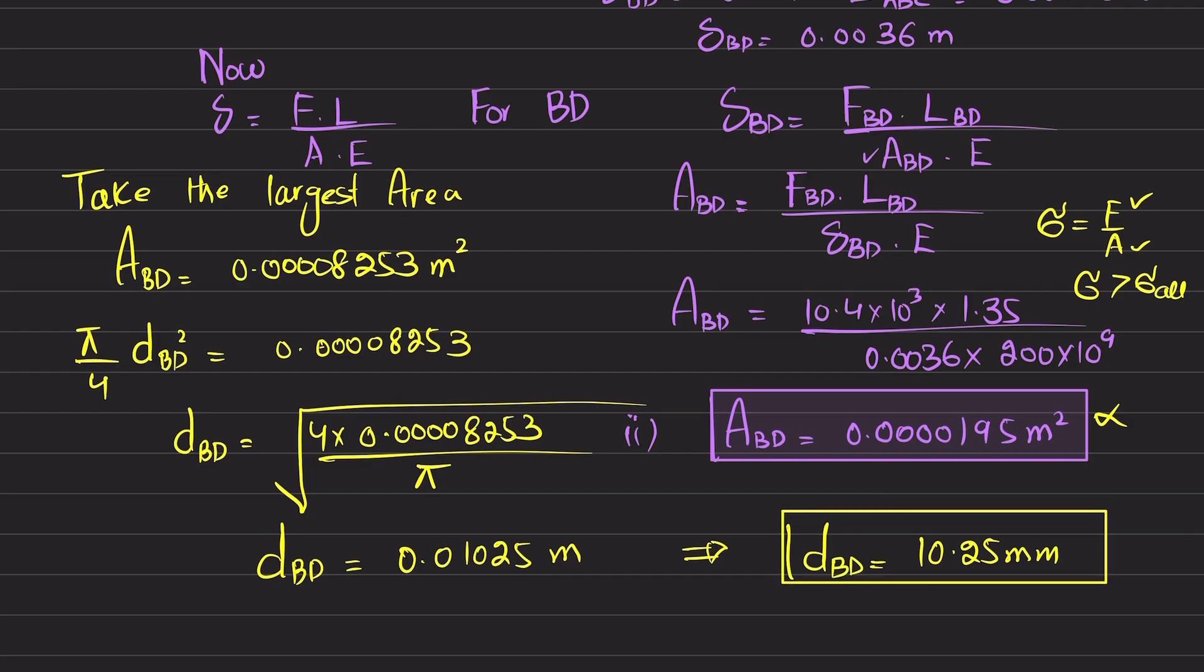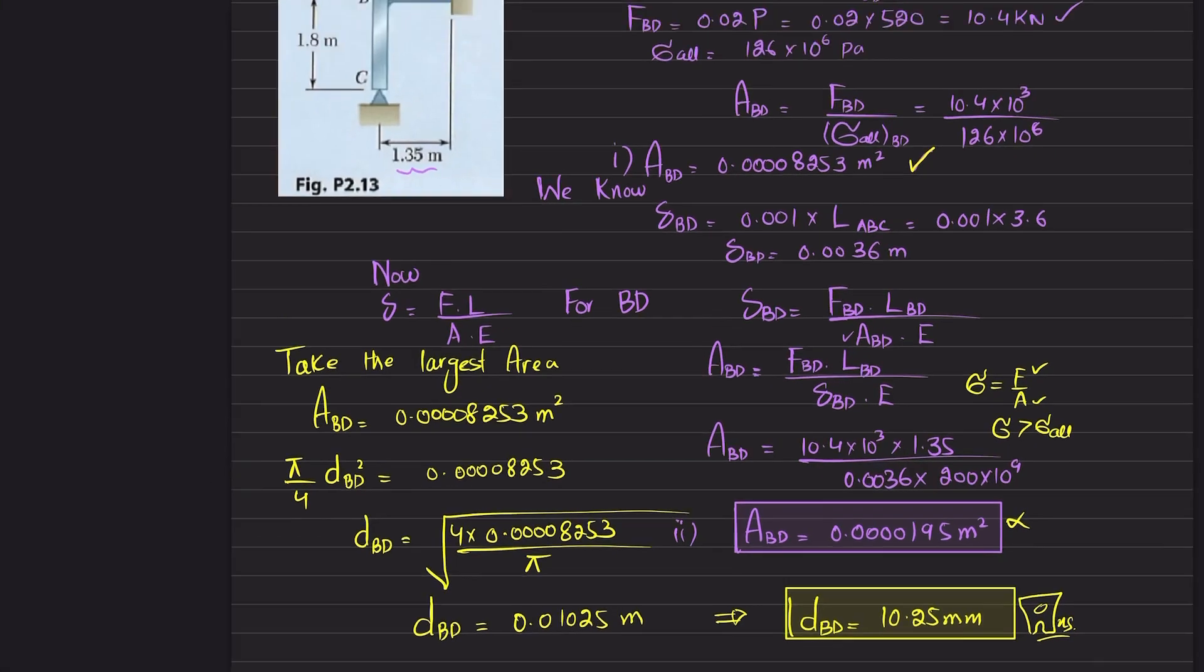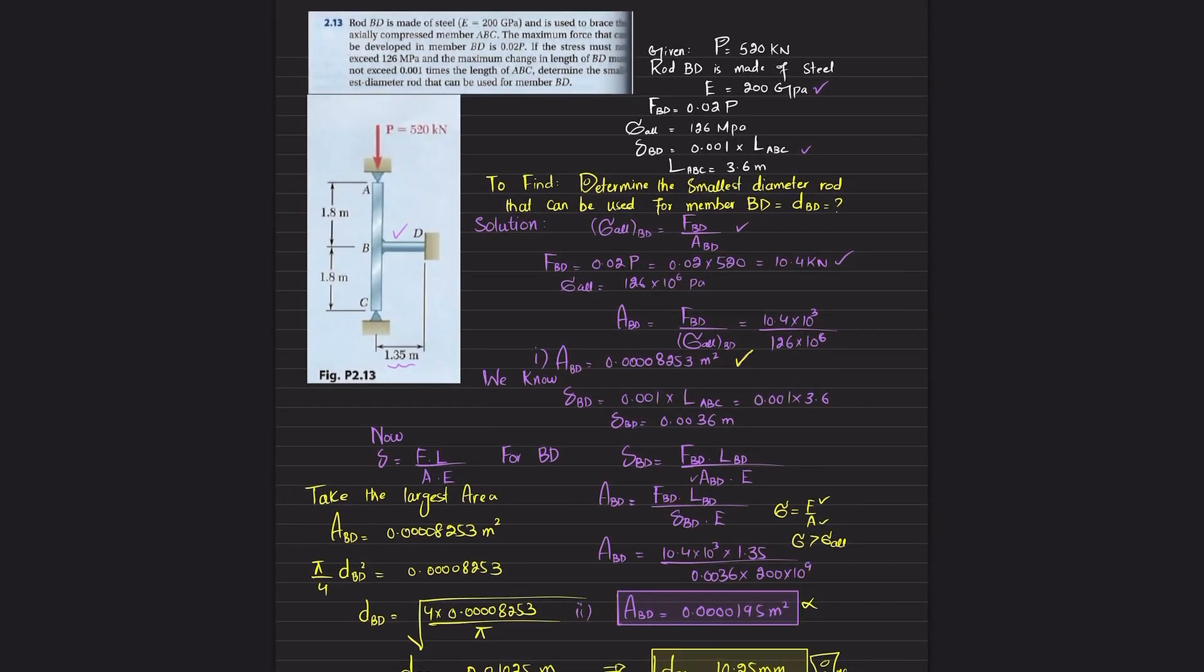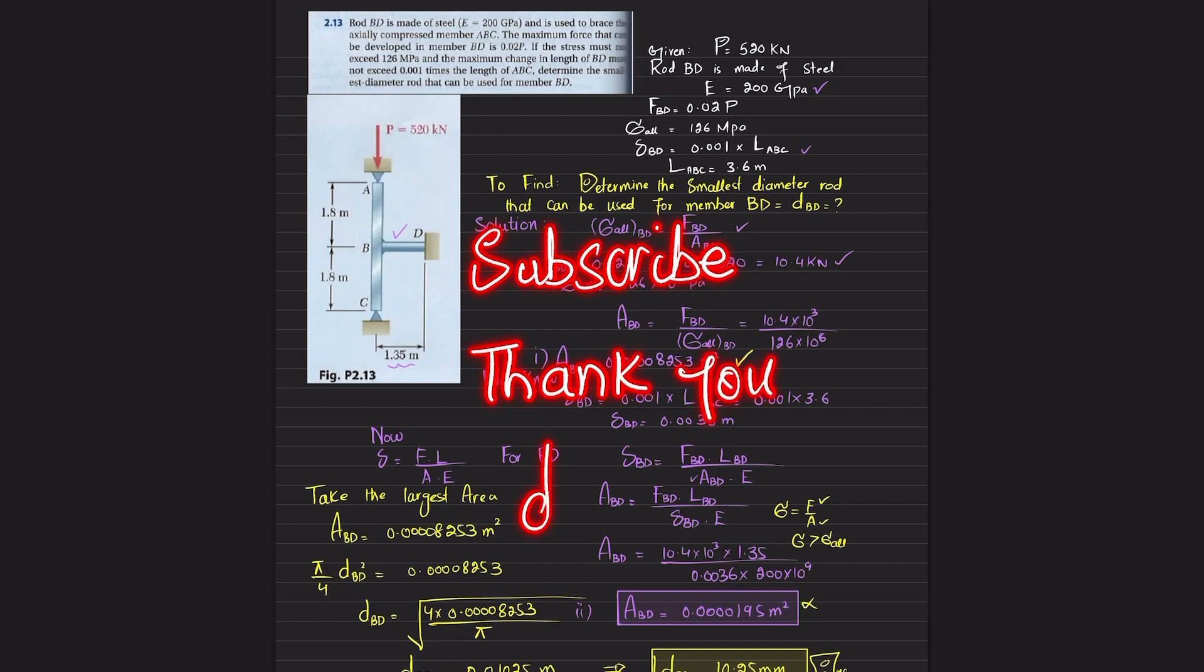So this is the smallest diameter of the rod that can be used for BD. And that was all about this problem 2.13 requested by a student. I hope you have enjoyed this video and you have learned from it. Those who are new to my channel, then subscribe it. And don't forget to press the bell icon so that you can get notification about my latest video. If you have any question, you can ask me in comment section. Thank you for watching.